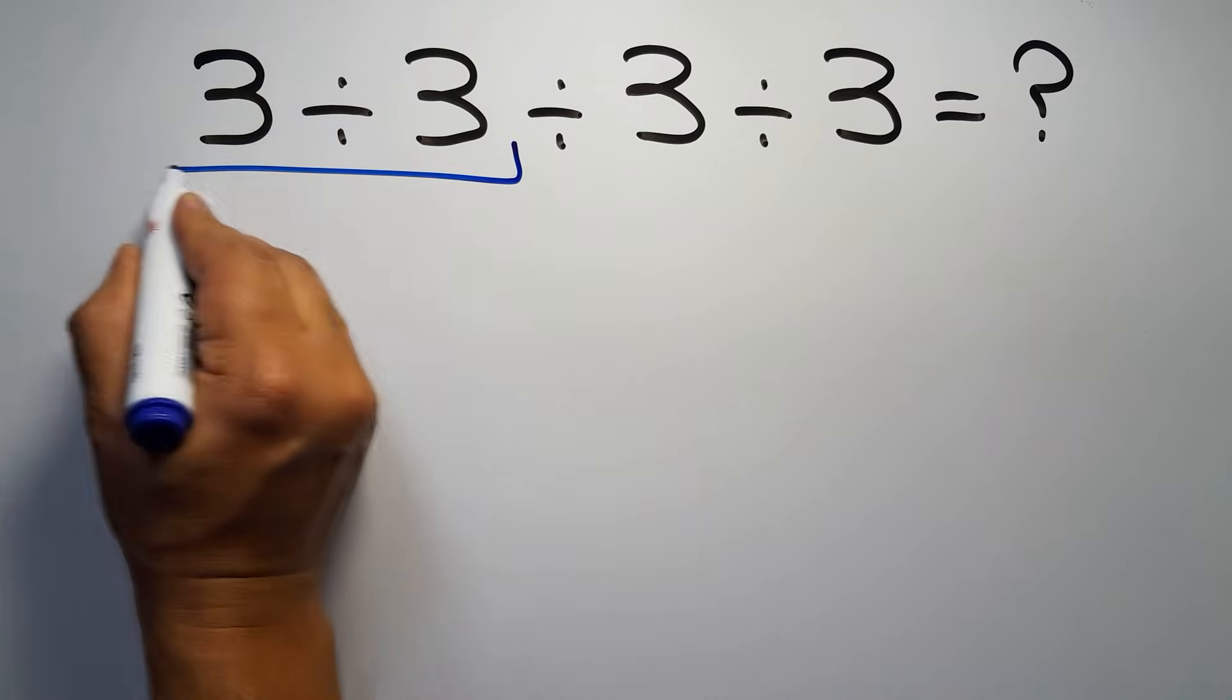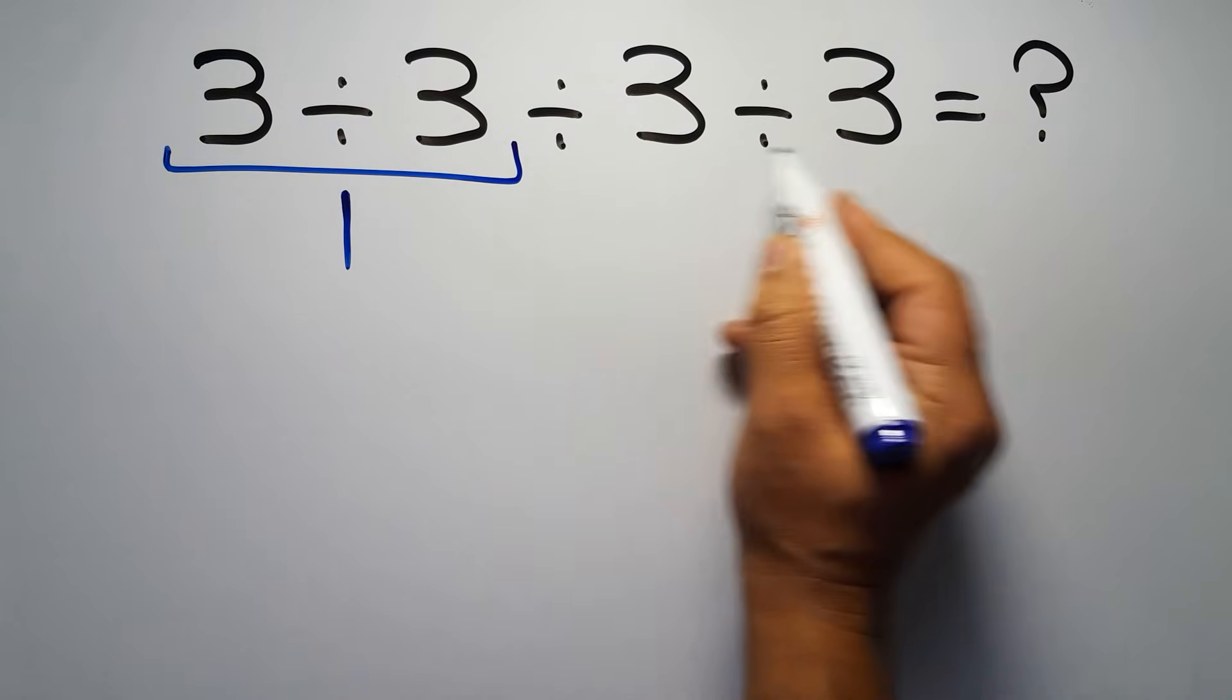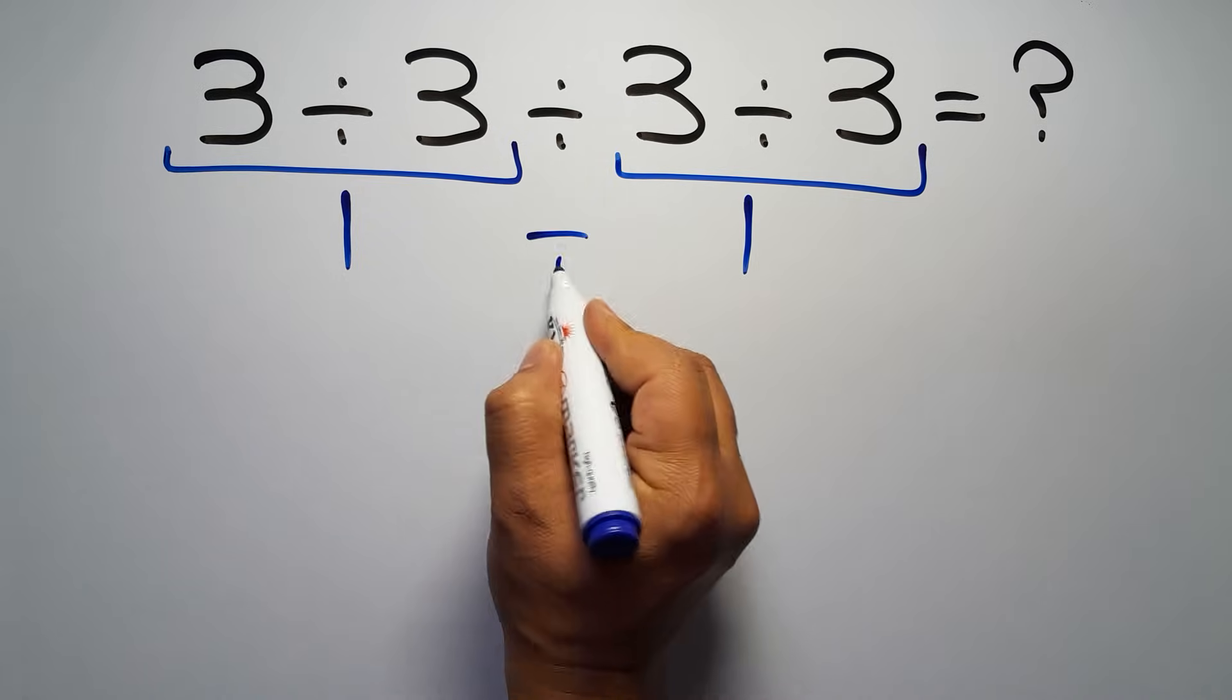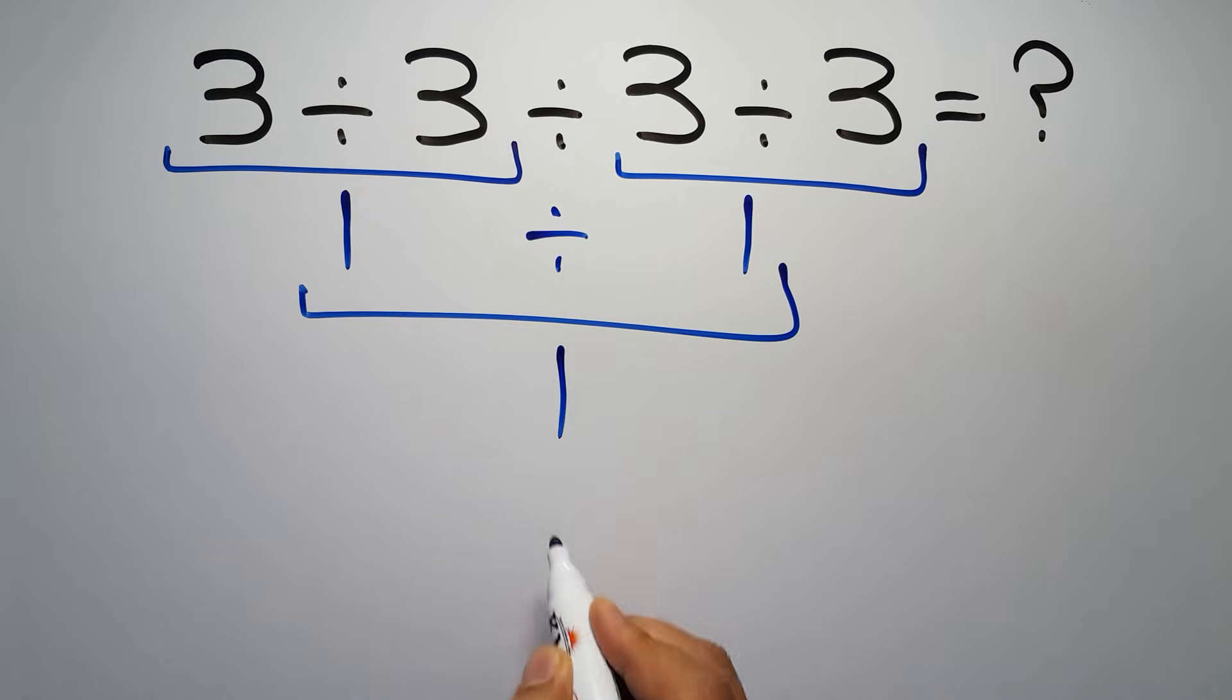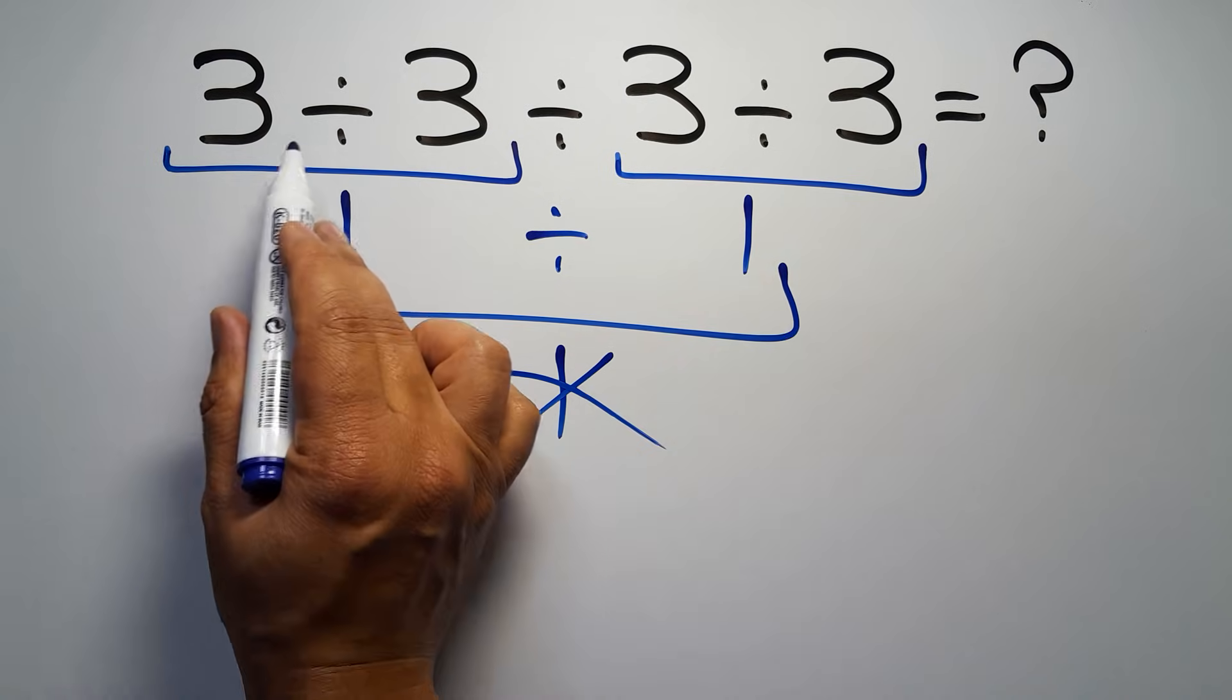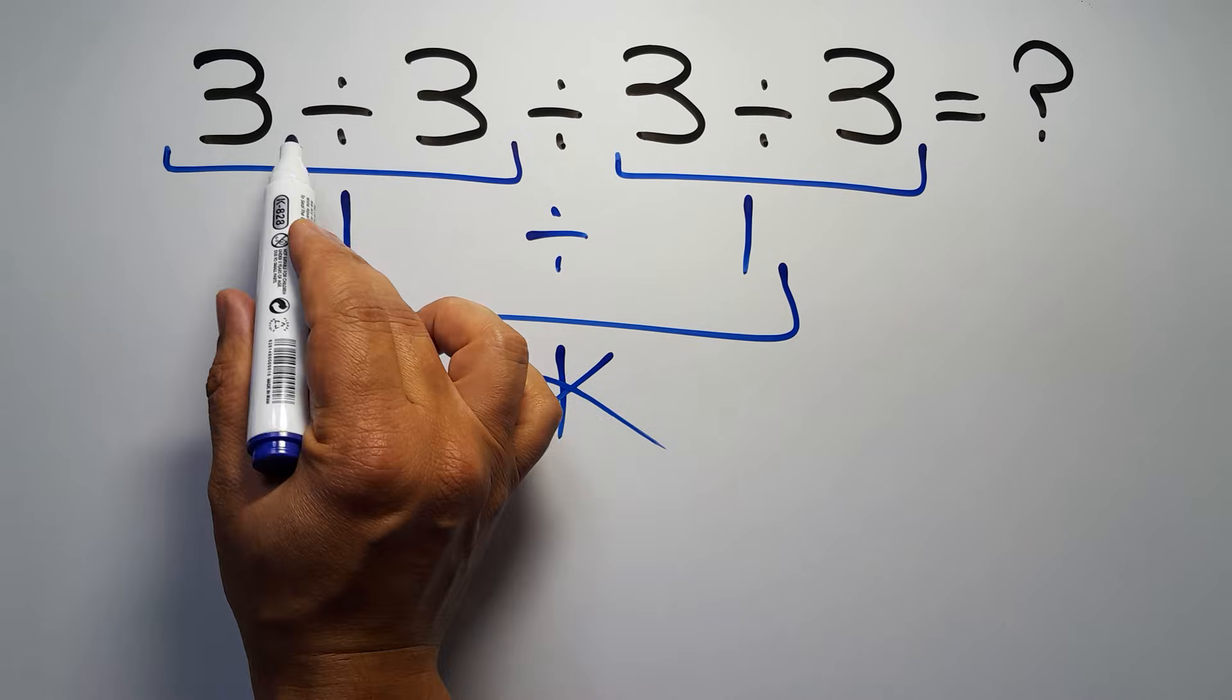3 divided by 3 equals 1, and again here we have 3 divided by 3, so 1 divided by 1 is just 1. But this answer is not correct because, according to the order of operations, when we have more than one division in an expression, we have to work from left to right.